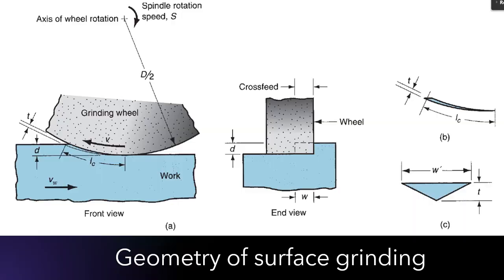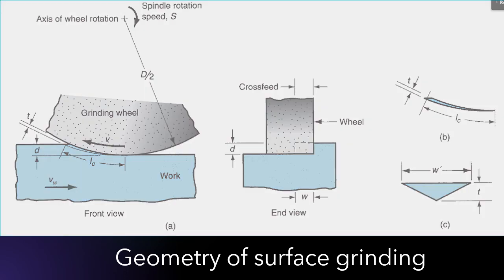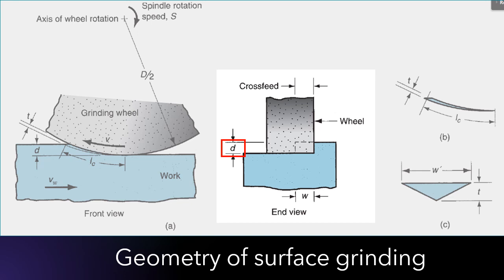The peripheral speed of the grinding wheel is determined by the rotational speed of the wheel and its diameter. The depth of the cut is called the in-feed, which is the penetration of the wheel below the original work surface.